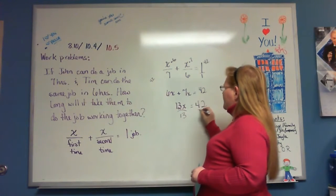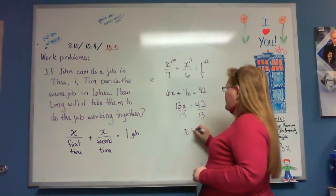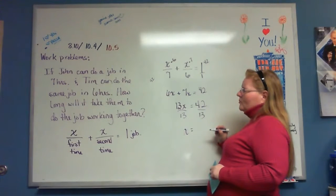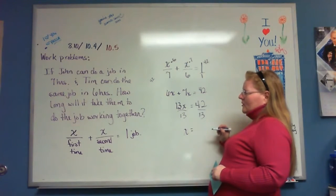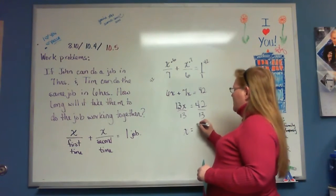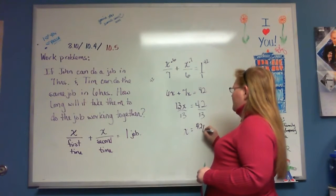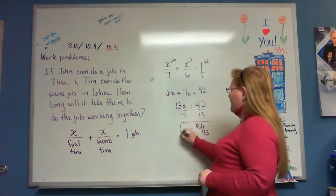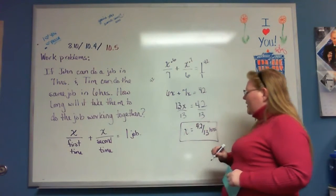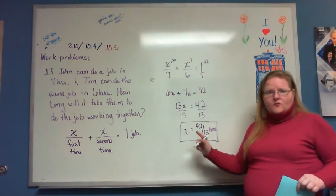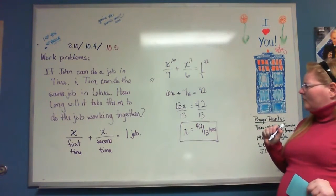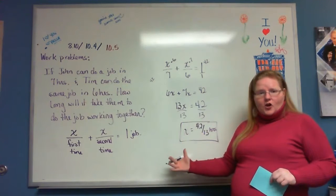6x plus 7x is 13x equals 42. Divide both sides by 13. 13 doesn't go into 42 evenly — 13 goes into 52 evenly but not 42 — so I'm going to leave it as 42 over 13 hours, because that's what our unit was. That's okay to leave it like that. Very quick and easy for me to check. Simple problem, not hard at all.